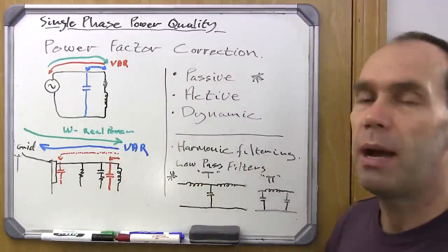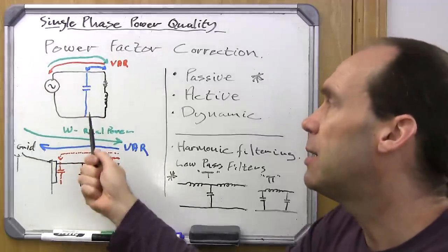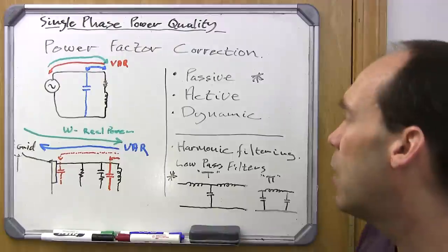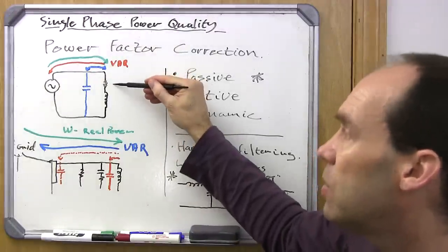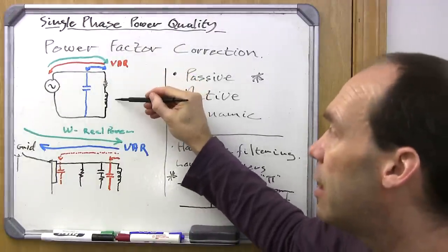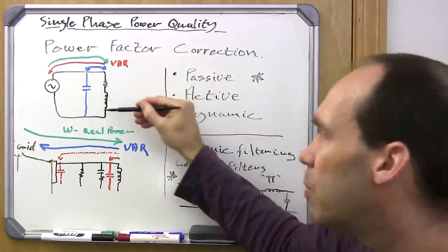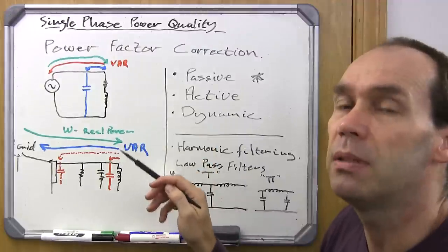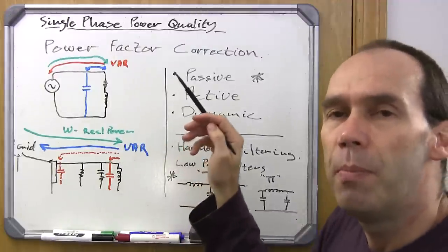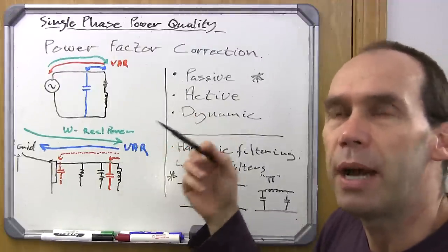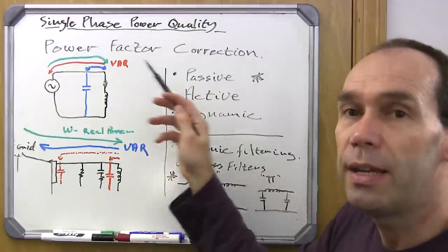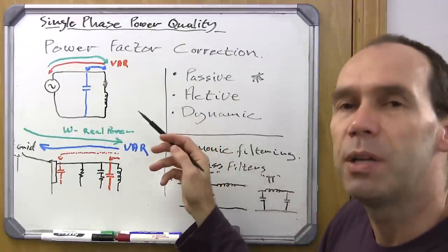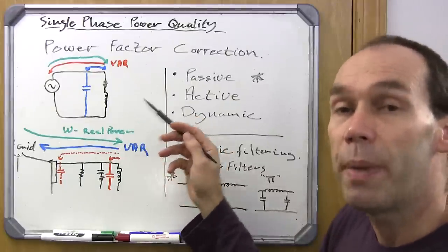Passive power factor correction uses a static component. If we've got an inductive load — a resistor and an inductor, probably a motor — this is where most power factor correction happens. Big industry uses big induction motors, and that is generally their problem. There isn't as big a focus on capacitive loads.